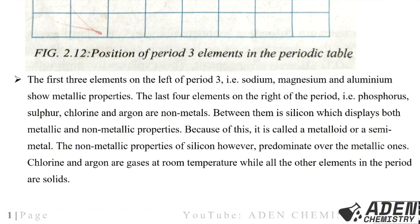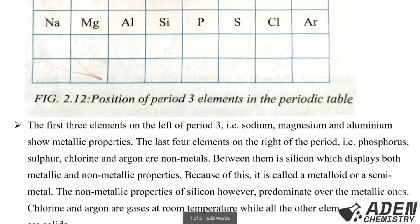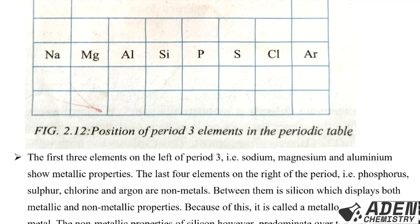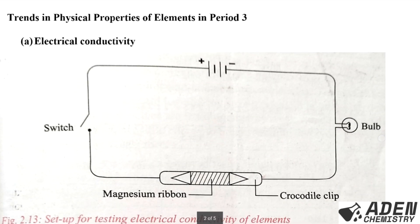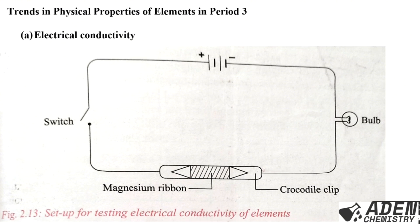Because silicon displays both metallic and non-metallic properties, it is called a metalloid or semi-metal. Chlorine and argon are gaseous at room temperature while the other elements in period 3 are solids. So we have three metallic elements — sodium, magnesium, aluminium — and silicon as the metalloid.